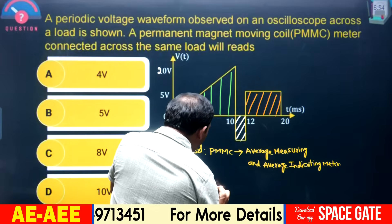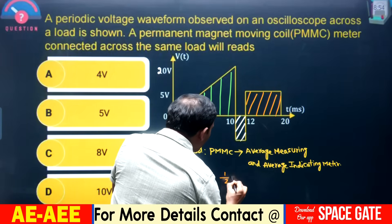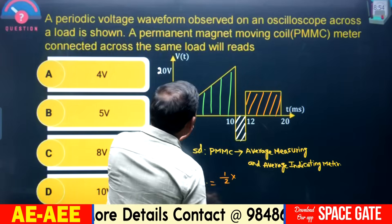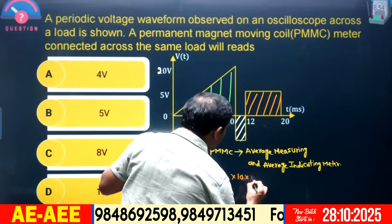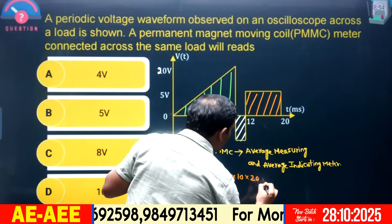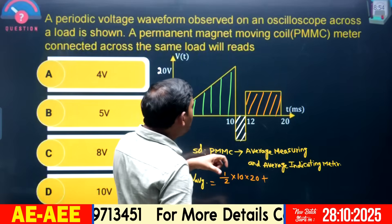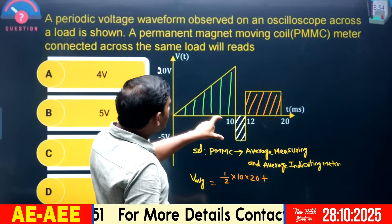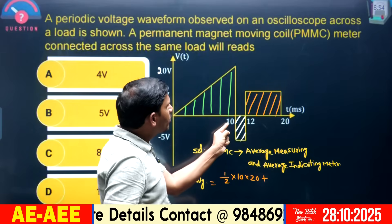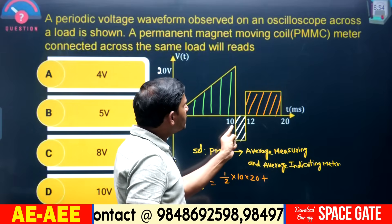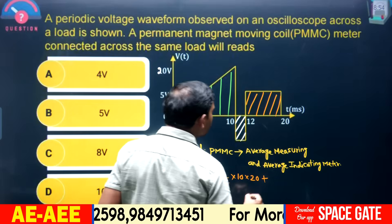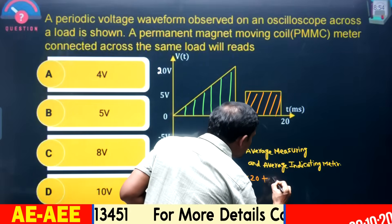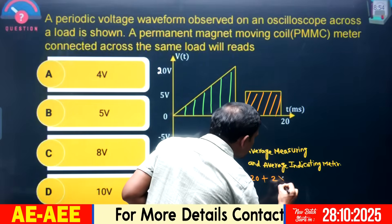The area of the triangle is half base times height: ½ × 10 × 10. For the rectangle from 10 to 12 — that interval is 2 ms wide — height is... let me check: 10 to 12 is 2, and the height value there is being verified.